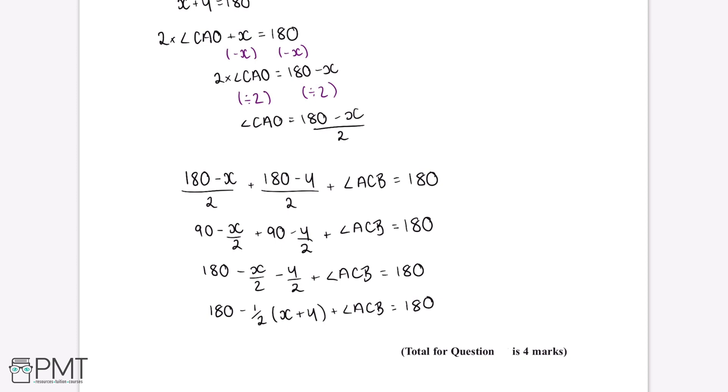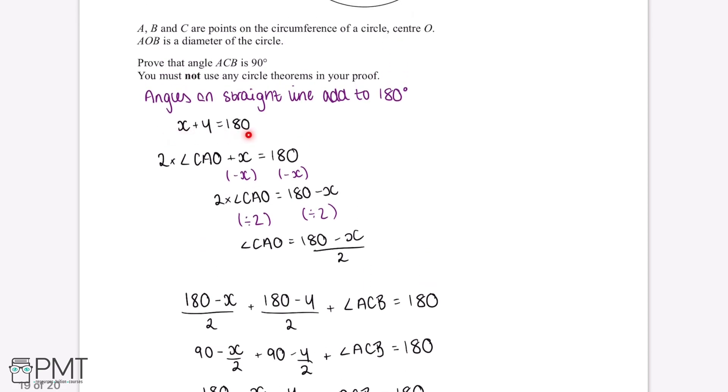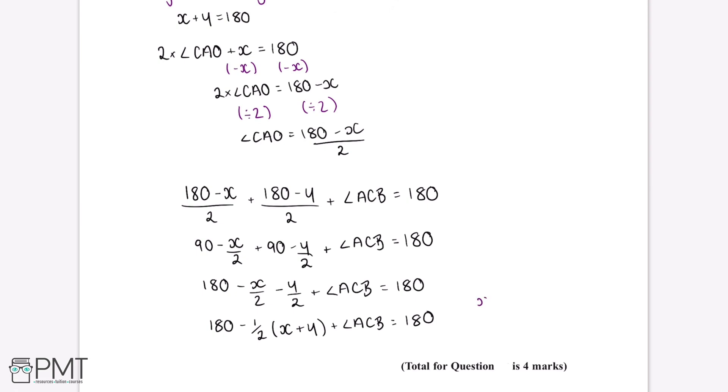If we look back at the start of the question, we showed that X plus Y is equal to 180 degrees. So we can substitute this into the equation we've formed. When we substitute this in, this gives us 180 minus a half multiplied by 180 plus the angle ACB is equal to 180.